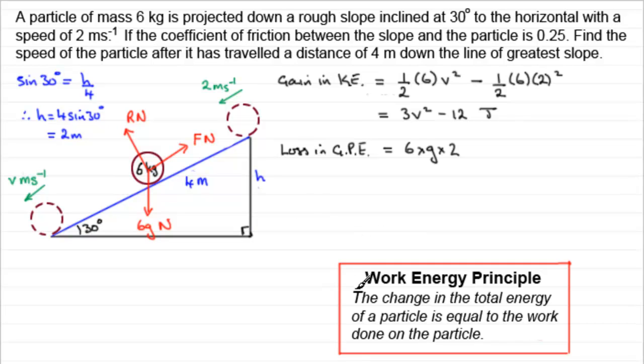So we need to look now at the change in the total energy. So let's just use this work energy principle. The change in energy is going to be equal to the work done on the particle, which is going to be the work done against resistance or friction. Let's just put here equals work done against friction. Now, what is that work done against friction going to be? Well, it's going to be the force times the distance moved, F times 4. So it equals F times 4 for now.